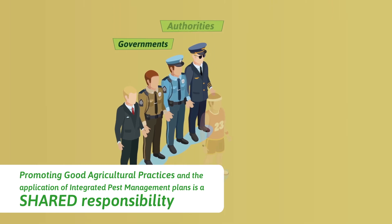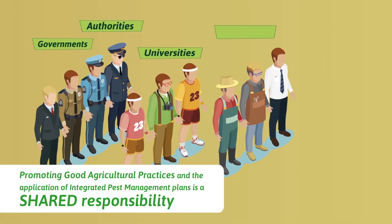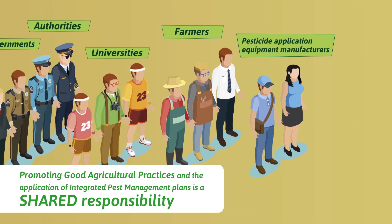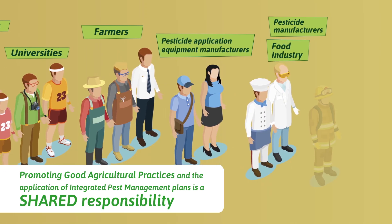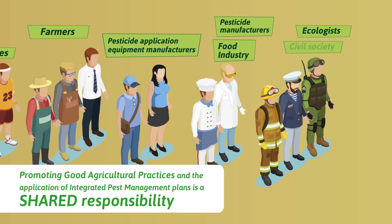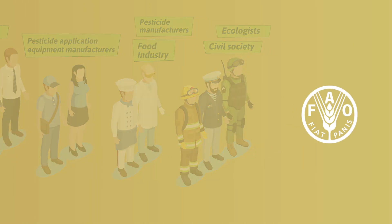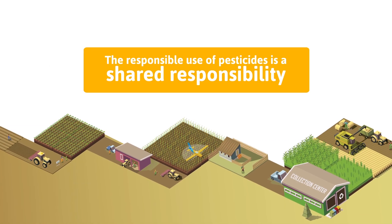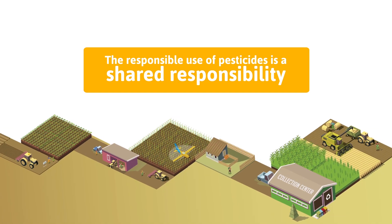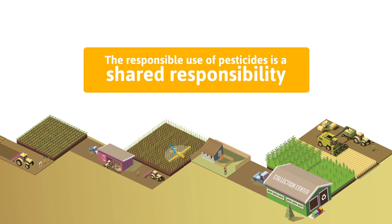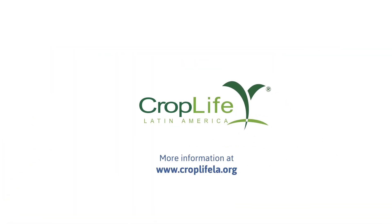Promoting good agricultural practices and the application of integrated pest management plans is a shared responsibility. It is a mandate by the Food and Agriculture Organization's FAO International Code of Conduct on Pesticide Management. Remember, the responsible use of pesticides is a shared responsibility. Which part are you responsible for?